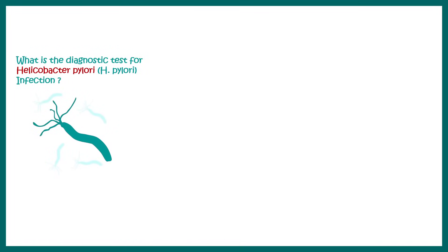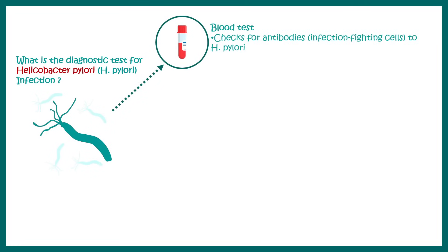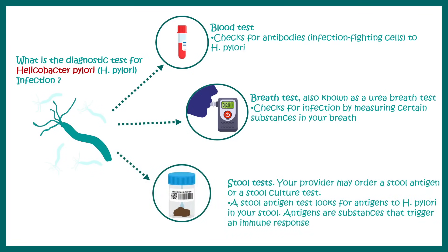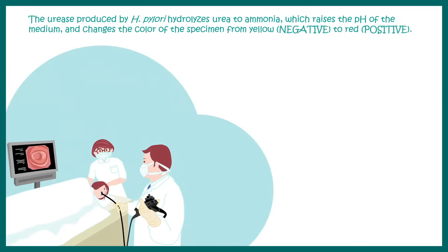Now let's talk about the diagnostic tests for Helicobacter pylori. There are a few tests such as a blood test, which checks for antibodies against H. pylori in your blood. There is a breath test, where several biomarkers in the breath can indicate whether you are infected with H. pylori or not. There is also a stool test, where an antigen test looks for Helicobacter pylori antigen in the stool.